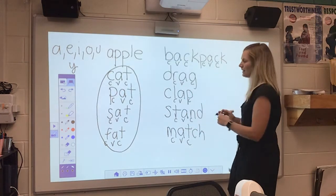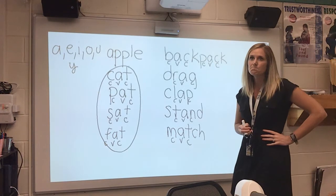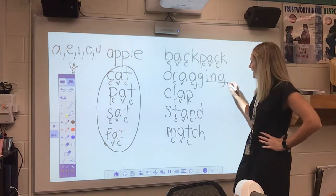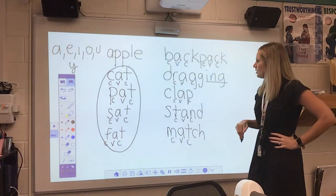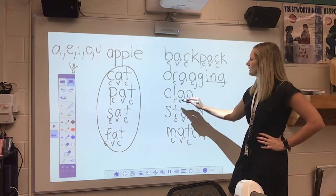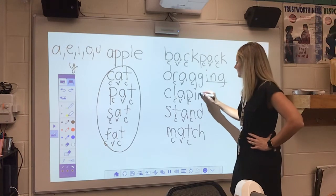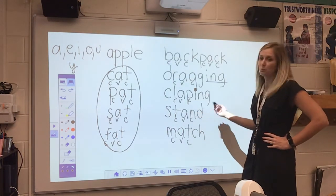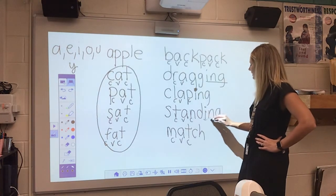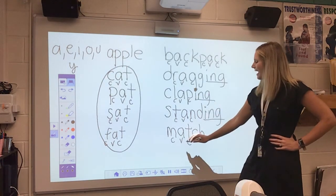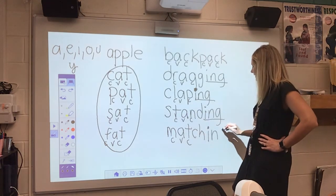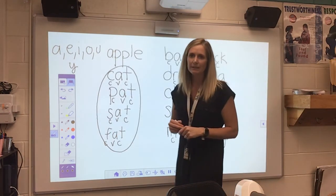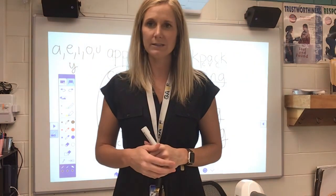'Drag' — what happens if we made this word 'dragging'? We just added the ending, but it still has that short A. Or 'clapping' — short A, clapping. We can make 'standing' — remember the -ing sound. 'Matching' — adding the -ing. So that is our short A sound. You're going to do an activity and try to find all the short A words that you can. Good luck!